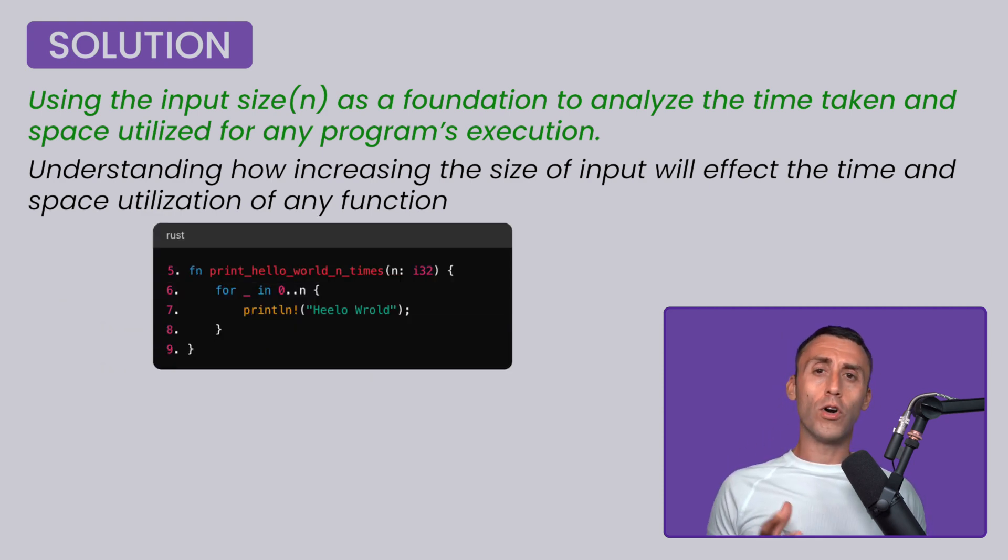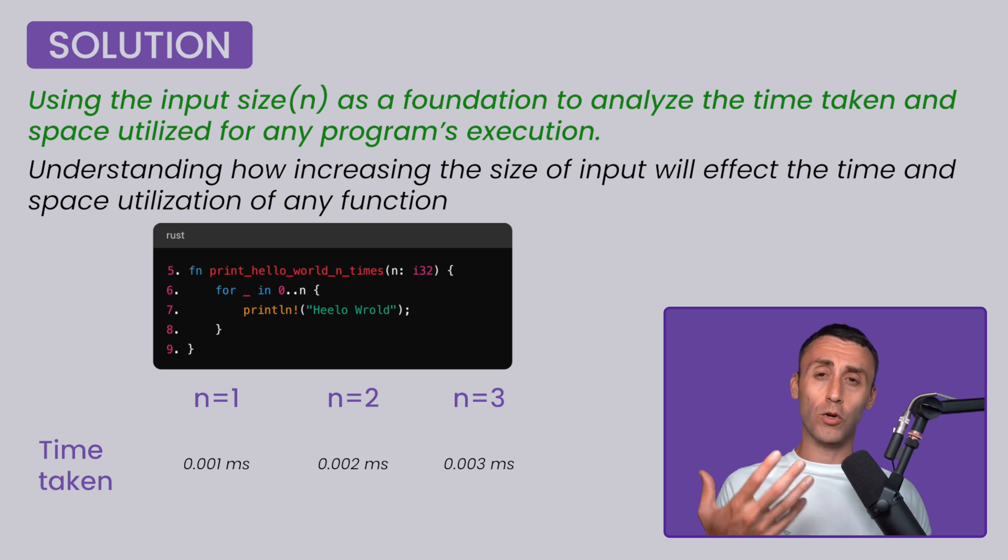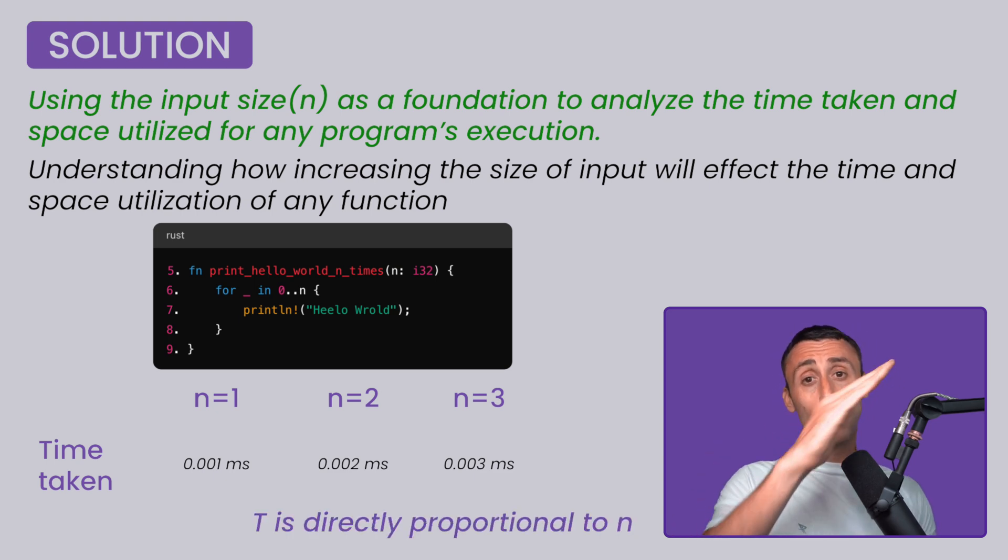Let's take the same hello world program, but with a twist this time. Let's print hello world n number of times. If we keep n equal 1, the program takes 0.001 millisecond to execute. If we increase the input to n equal 2, the program will take twice as long because it will have to print hello world two times, which makes the execution time 0.002 millisecond. This goes on likewise, hence you can conclude that the time taken by this program is directly proportional to the input size.